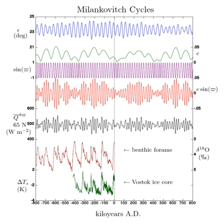Effect on lengths of seasons: The seasons are quadrants of the Earth's orbit, marked by the two solstices and the two equinoxes. Kepler's second law states that a body in orbit traces equal areas over equal times.